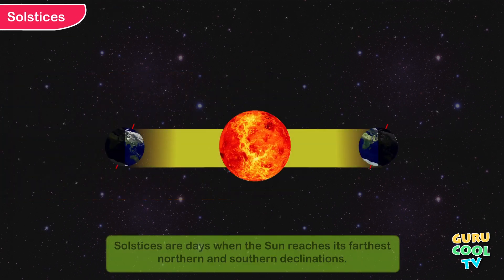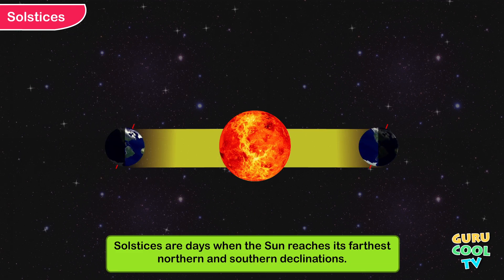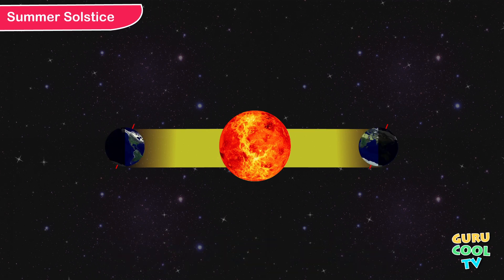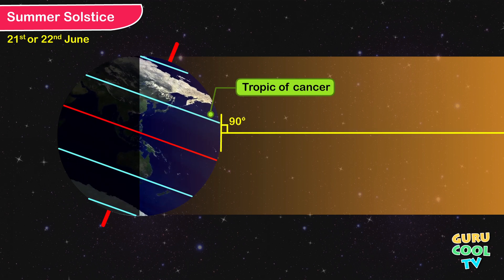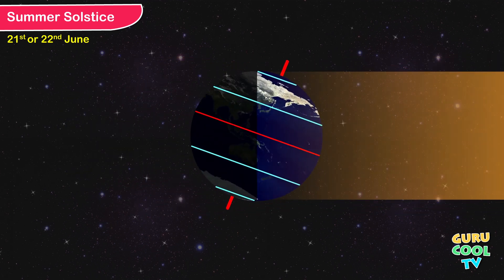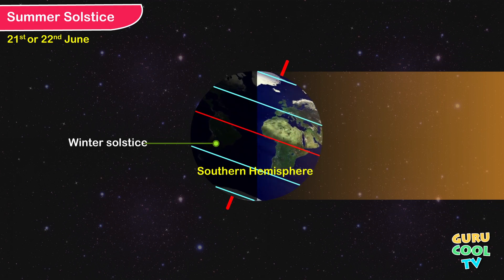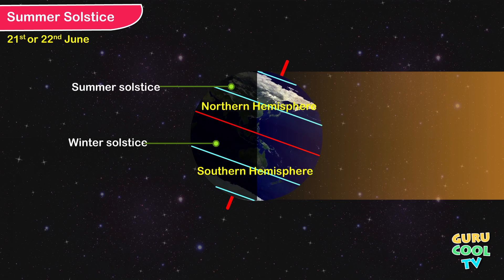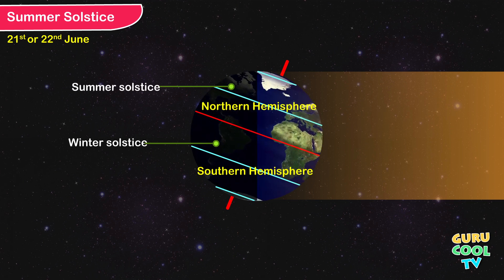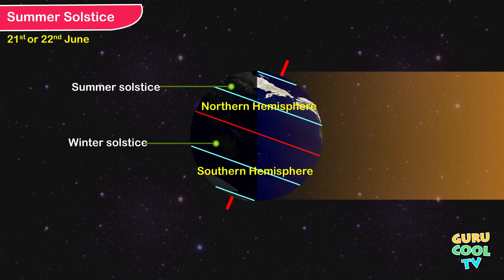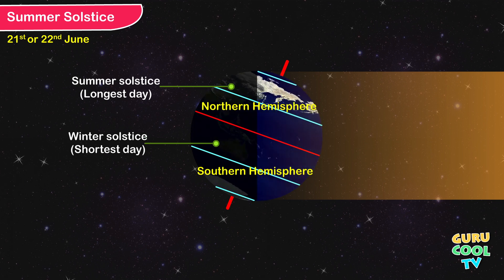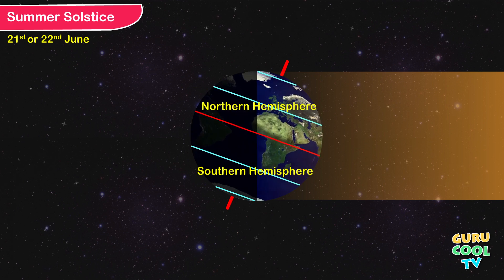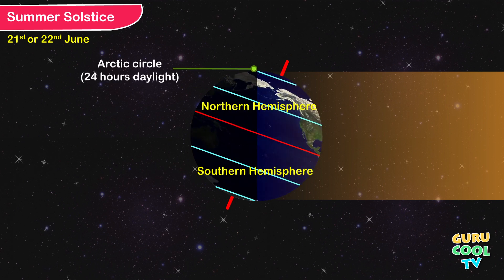Solstices: the solstices are days when the Sun reaches its farthest northern and southern declination. Summer Solstice: on the 21st or 22nd of June, the overhead Sun is on the Tropic of Cancer. On this day, the southern hemisphere is in winter solstice and the northern hemisphere is in summer solstice. The northern hemisphere experiences summer with the day being the longest day of the year, while the southern hemisphere has winter with the day being the shortest day of the year. The Arctic Circle has 24 hours of daylight.